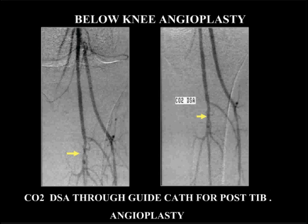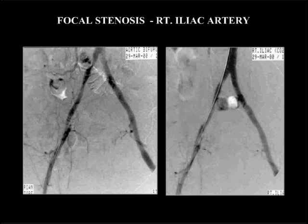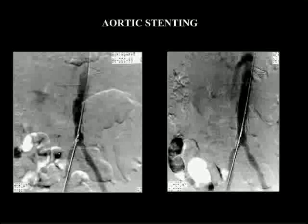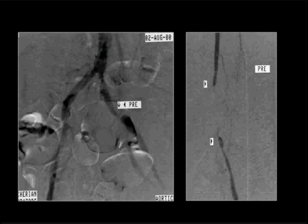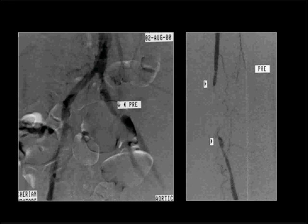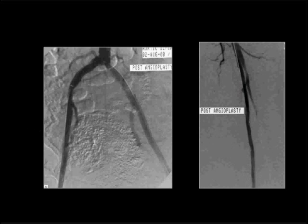Here is a patient with stenosis in the tibial peroneal trunk — carbon dioxide angiography before and after balloon angioplasty. This is a patient with multiple iliac stenosis and the end result after angioplasty, done again with carbon dioxide gas. Here is a patient with stenosis in the aorta. This is a patient with total occlusion in the iliac artery before and after stenting. And this is a patient with stenosis in the iliac and SFA — CO2 angiography, after stenting and post angioplasty of the fibular artery.